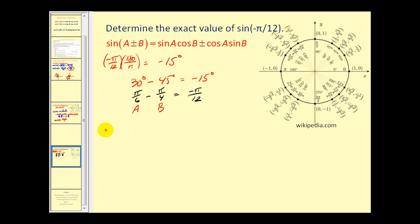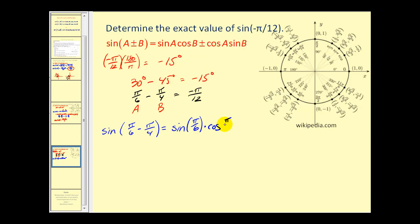Setting it up: sine(π/6 - π/4), which gives us -π/12. This equals sine(A) times cosine(B) minus cosine(A) times sine(B), which is sine(π/6) times cosine(π/4) minus cosine(π/6) times sine(π/4).